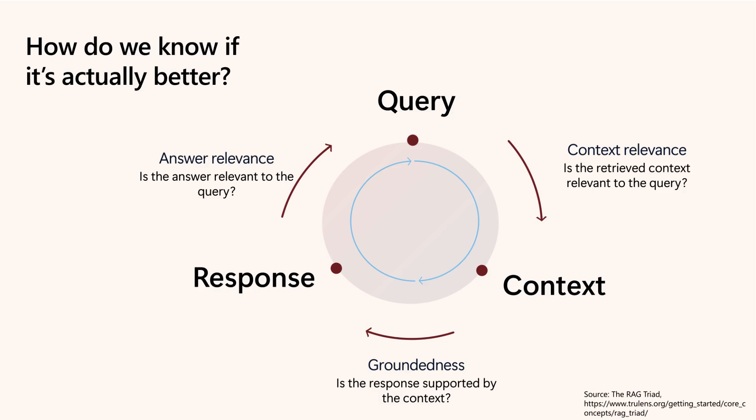Evaluating retrieval augmented generation systems demands more than single metrics. We assess across content relevance, answer relevance, and groundedness, ensuring answers not only respond correctly but are supported by retrieved data, avoiding hallucinations. This thorough evaluation framework guides ongoing improvements in retrieval quality and trustworthiness.